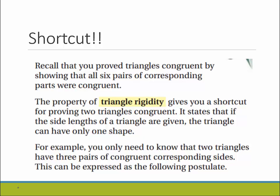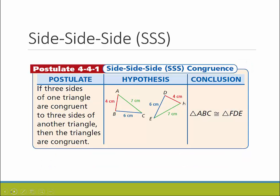It states that if the side lengths of a triangle are given, the triangle can only have one shape. For example, you only need to know that two triangles have three pairs of congruent corresponding sides. The side-side-side congruence postulate says that if three sides of one triangle are congruent to three sides of another one, then the triangles have to be congruent.